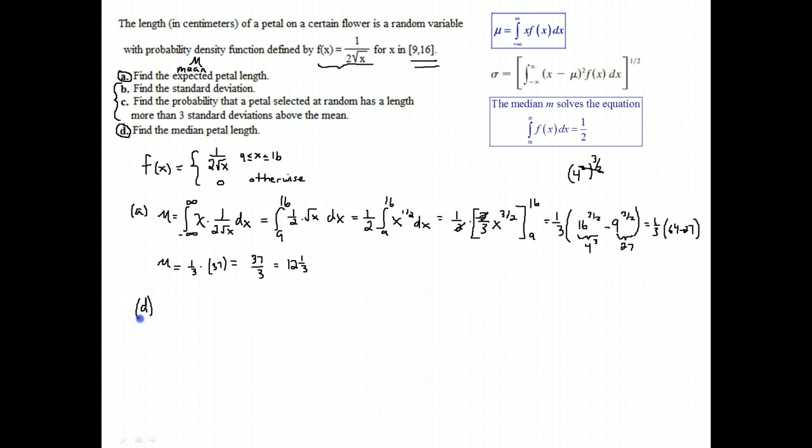Part D is to find the median petal length. We have the formula for finding the median. There's an equation that gets set up that the median is this value M, that when you integrate from M to infinity, you end up with exactly half of the area. Now remember the function is only alive between 9 and 16. The function is 0 less than 9, it's 0 when you're more than 16 for x, and it's only between 9 and 16 that the function becomes 1/(2√x). So if I'm supposed to integrate from M to infinity, then that will translate to me integrating from M to 16.